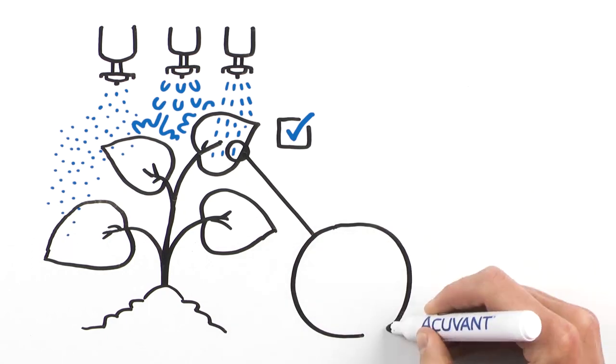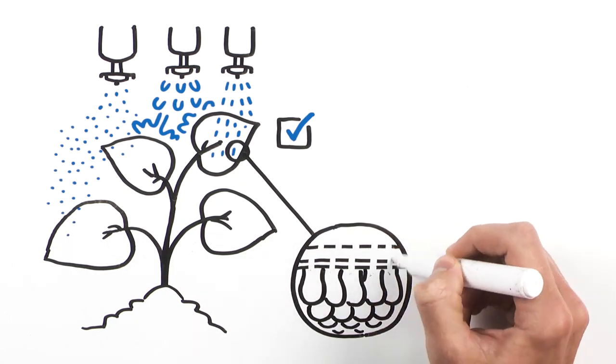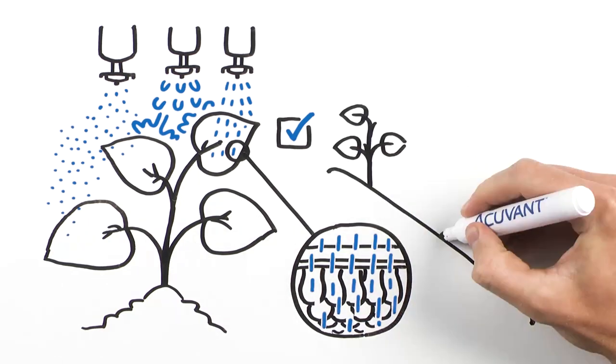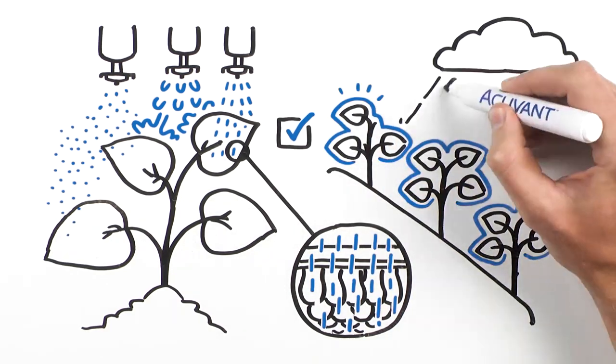So you can be confident your crop protection products adhere to the target leaf, where they can penetrate the surface and go to work. They'll also be less likely to wash off during irrigation and rain.